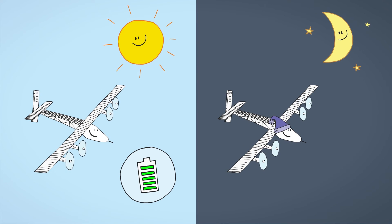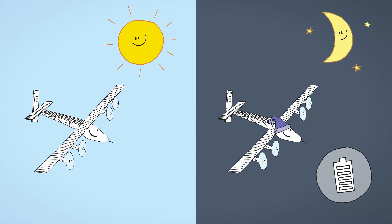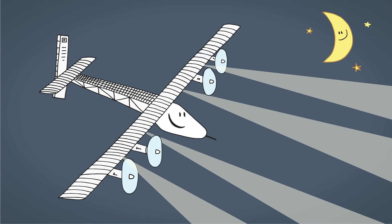Batteries stock the extra energy produced by the solar cells during the day and give it back to the motors during the night. They are also used to supply powerful but economical LED lamps for landing.